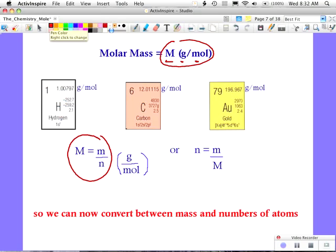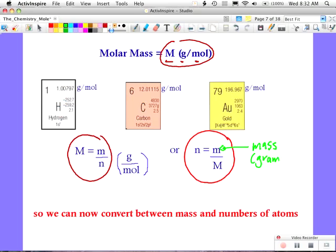The version of it we usually remember is we just transpose the formula, we get n equals m on M. So we've got m is mass in grams, we've got big M is molar mass, or it's actually equal to the relative atomic mass just straight off our periodic table. And n equals the number of moles or amount of substance. This is the big formula for mole. You can convert, we can now convert between mass and numbers of atoms. So that's the one to remember, n equals m on M, that's going to get you through.